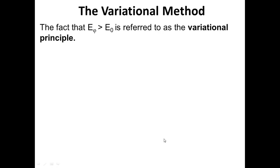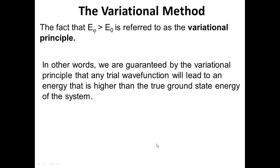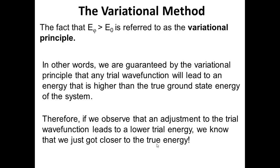This fact — that whatever trial wave function we guess will lead to an energy higher than the true ground state energy — is referred to as the variational principle. This is useful because it means we'll always be above the true ground state energy. If we go back and adjust our parameter to make the wave function better, we'll know we made it better if the energy goes down. If an adjustment causes the energy to go up, we know we've moved further from the true answer. An adjustment that lowers the energy means we're getting closer to the answer.